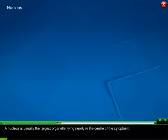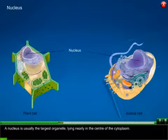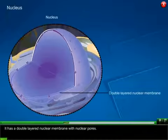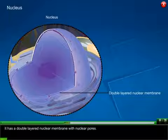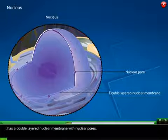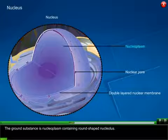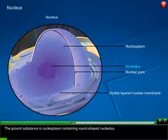Nucleus: A nucleus is usually the largest organelle lying nearly in the center of the cytoplasm. It has a double-layered nuclear membrane with nuclear pores. The ground substance is nucleoplasm containing round-shaped nucleolus.